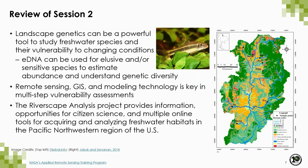So a review of session two before we jump into session three today. Landscape genetics is a powerful tool to study freshwater species and their vulnerability to changing climate conditions. eDNA can be used for elusive or sensitive species to estimate abundance and understand genetic diversity. Remote sensing, GIS, and modeling technology is key to this multi-step vulnerability assessment. The Riverscape Analysis Project provides information, opportunities for citizen science, and multiple online tools for acquiring and analyzing freshwater habitats in the Pacific Northwestern United States, and many of these analysis types could be applied to different regions.